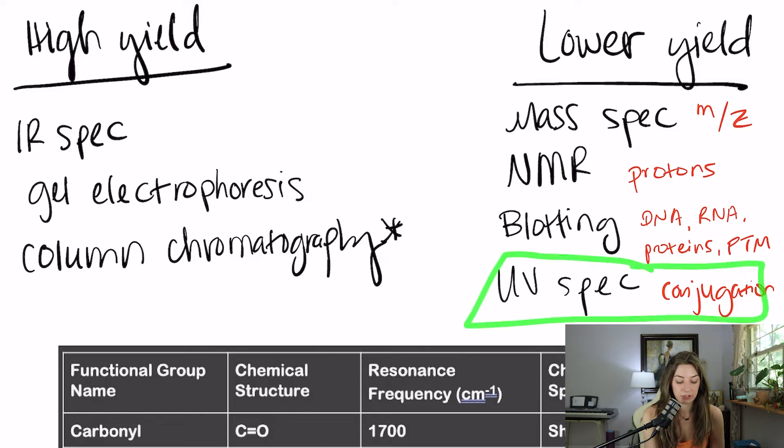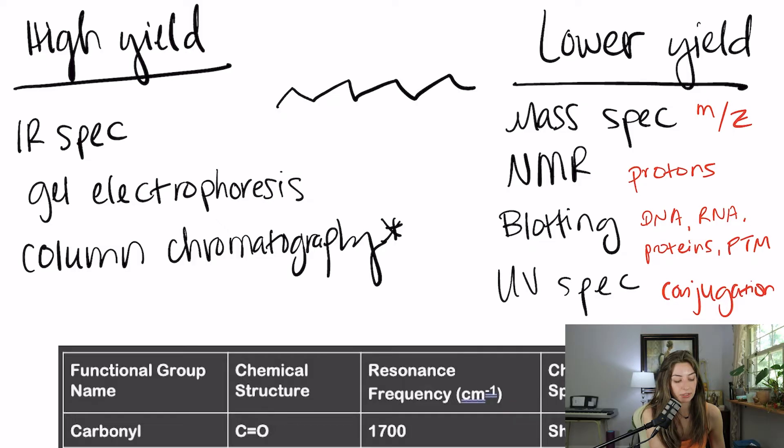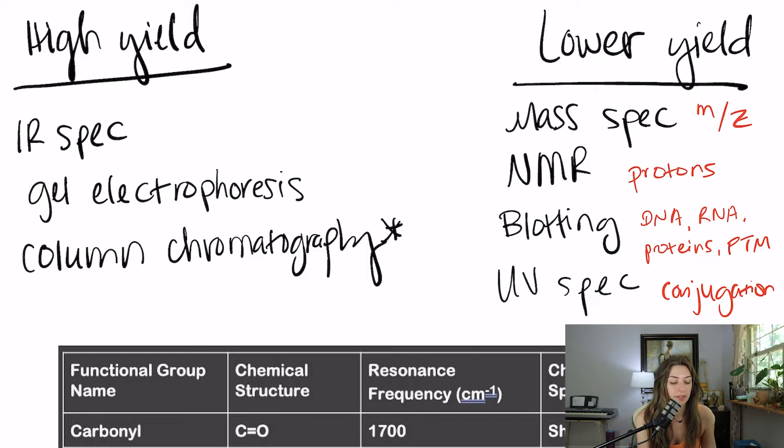UV spec is basically shining UV light onto some molecules and seeing their response to it and how much of that UV light is absorbed. The most important thing to know for UV spec is that your conjugated molecules are going to absorb the most UV spec. So if you ever see something like which one would have the highest whatever on UV spec, just pick the one that's the most conjugated. So that has the most double bonds, like every other double bond, like a conjugated molecule.